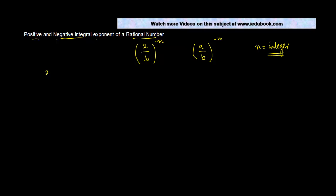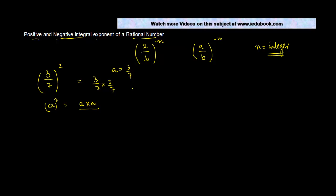Let's say you have 3 upon 7 to the power 2. If we let a equal 3 upon 7, this is nothing but a squared. A squared can be written as a into a, so 3 upon 7 squared is 3 upon 7 into 3 upon 7, or 3 into 3 upon 7 into 7, which is 3 to the power 1 times 3 to the power 1 divided by 7 to the power 1 times 7 to the power 1.